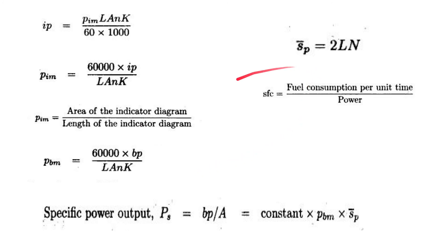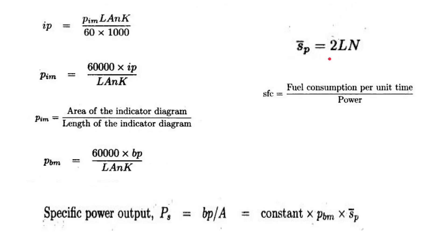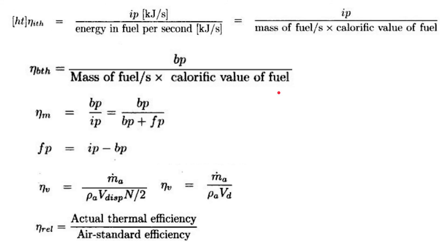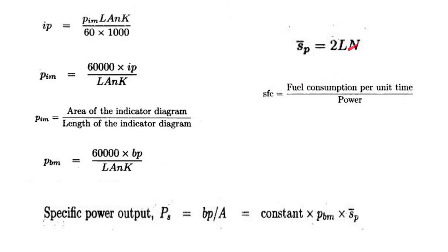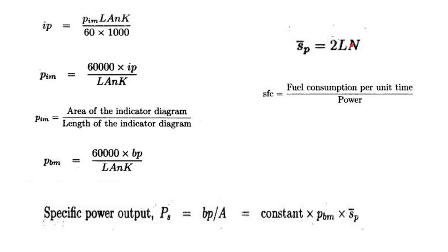Mean piston speed SP-bar is defined as: SP = 2 × stroke length × N, where N is speed in revolutions per minute. This gives units of meters per minute, so convert to meters per second as needed. If N is given in radians per second, convert accordingly — radians are dimensionless in units, so convert N to radians per second and use it in the formula to get meters per second.